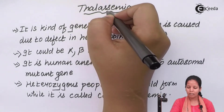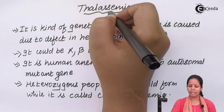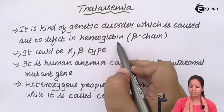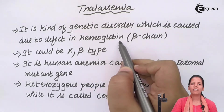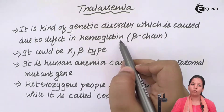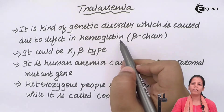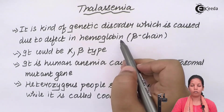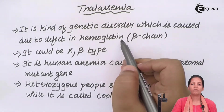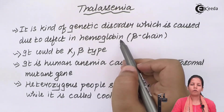Thalassemia is a kind of genetic disorder which is caused due to defects in the hemoglobin chain subunit. Once that hemoglobin chain subunit is disrupted in any manner, the formation of hemoglobin would be stopped or altered. Since hemoglobin is responsible for the energy levels needed to carry out all kinds of work, this may lead to anemia — and this anemia is very severe. It's not the anemia that you get from food deficiency; it's a specific type of anemia.